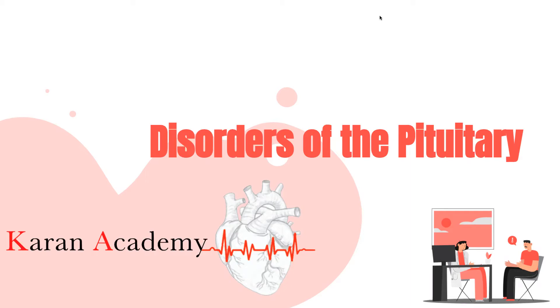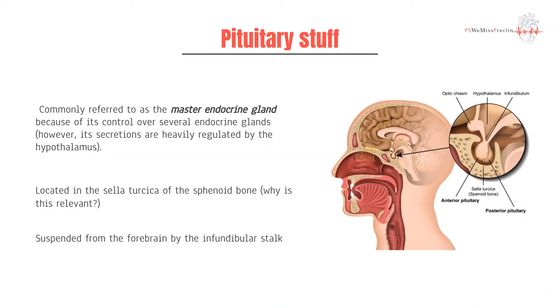feel free to skip to the second half of this lecture. The pituitary is known as the master endocrine gland because it controls a lot of endocrine organs, as you probably know. But the secretions of the pituitary itself are controlled by the hypothalamus.